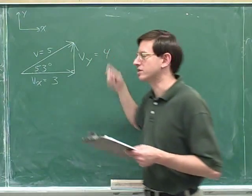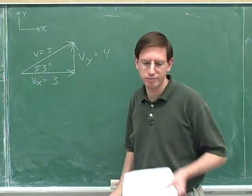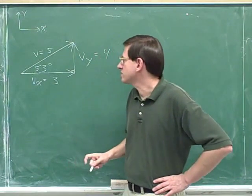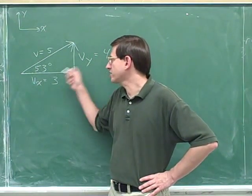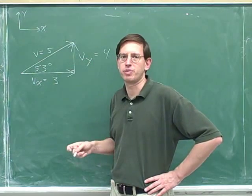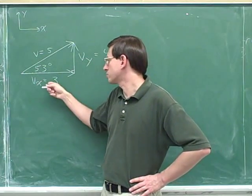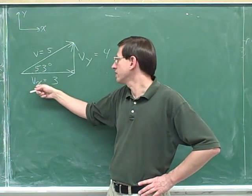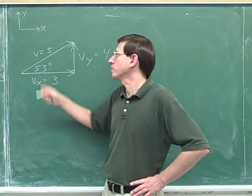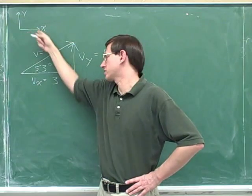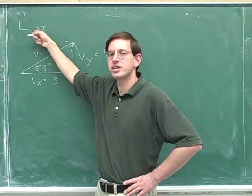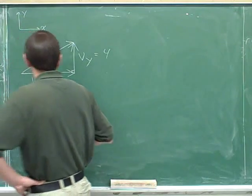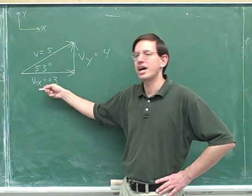I'm just going to tell you that this number over here is 4 and this one is 3. Now this is actually not quite right, because we haven't yet indicated the directions of the components. We should also be indicating the directions of these components. We know that this x component is pointing to the right and we've chosen right as our positive direction. So the only correct way to write this is that the x component is positive 3.